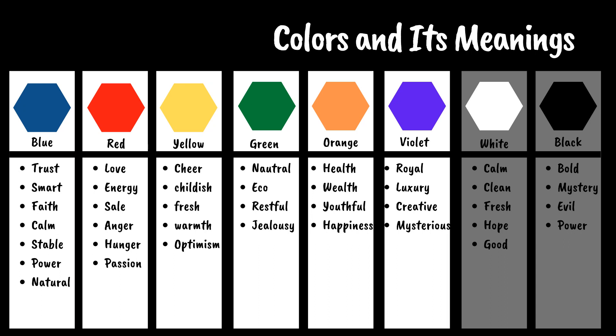And then the other color — color red. Color red represents love, energy, sale, anger, and also hunger. And then the last one is passion. So every color — which includes blue, red, yellow, green, orange, violet, and also white — they all have their own meaning.